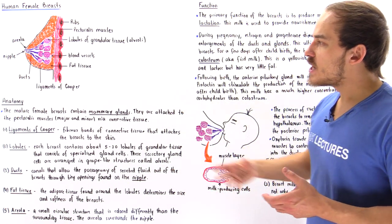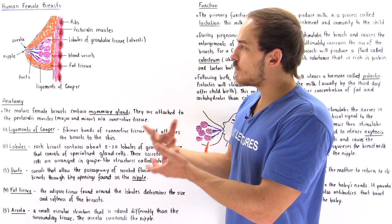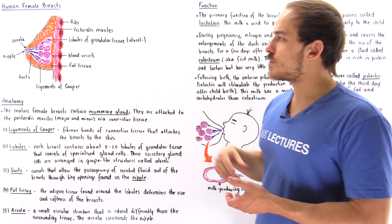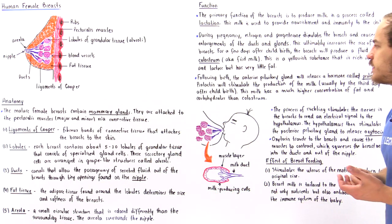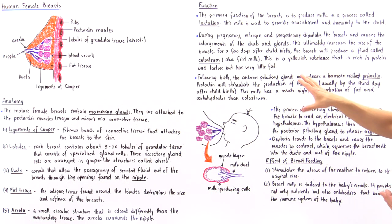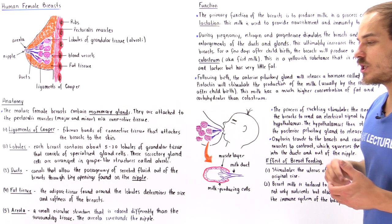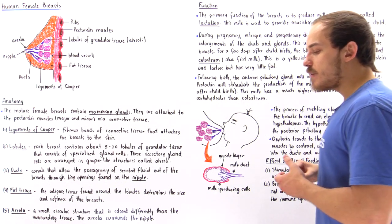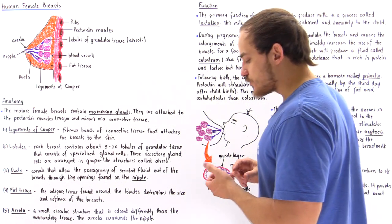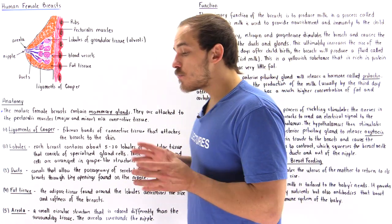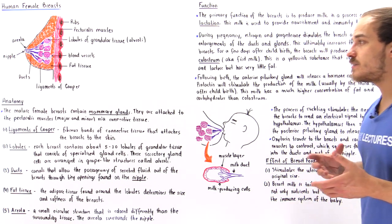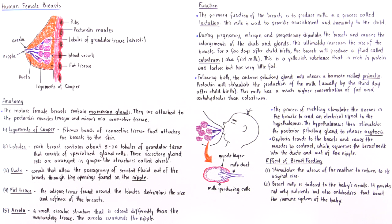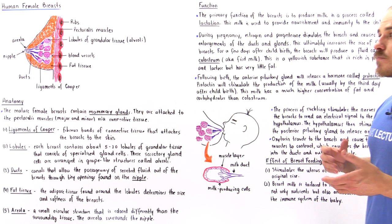That is the brief anatomy of the human female breast. Now let's move on to the function. The primary function of the female breast is to produce milk via a process known as lactation.